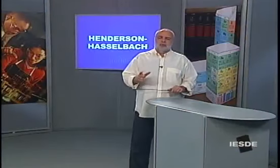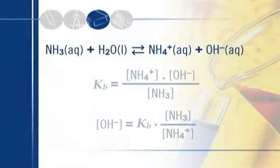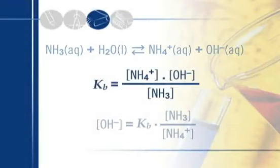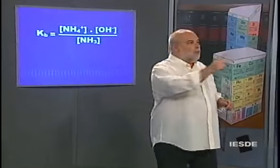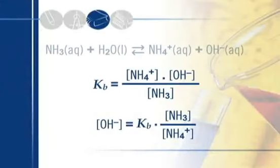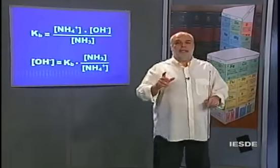Concentração de H⁺ é Ka vezes concentração de HAc sobre concentração de Ac⁻. Essa expressão extraordinariamente conhecida é chamada de equação de Henderson-Hasselbalch. A equação de Henderson também pode ser aplicada para bases. Para a amônia: amônia mais água dando amônio e hidroxila. Kb é igual a concentração de amônio vezes concentração de hidroxila sobre concentração de amônia. Concentração de OH⁻ é igual a Kb vezes concentração de amônia sobre concentração de amônio — a forma básica da equação de Henderson-Hasselbalch.